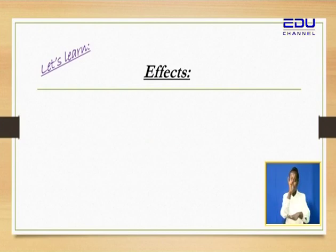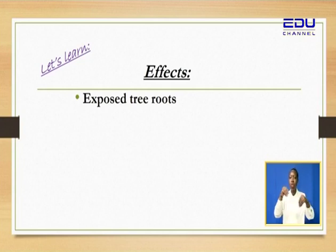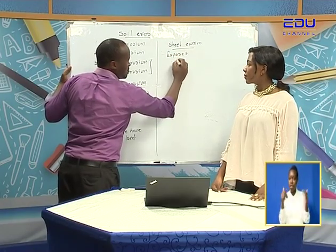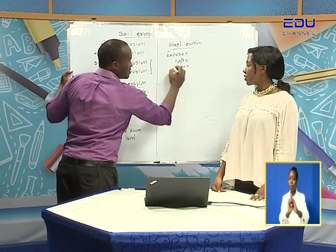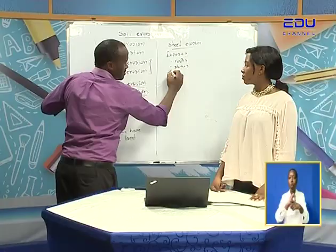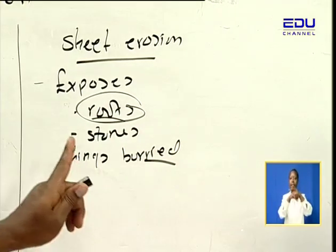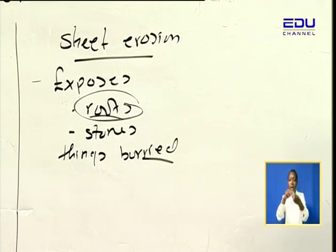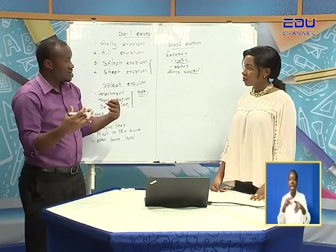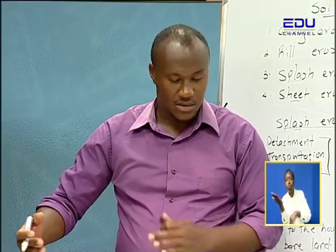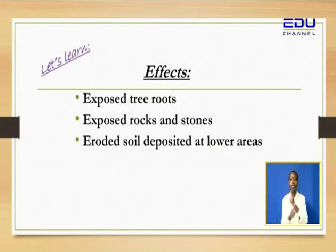Some of the effects of sheet erosion: we have exposure of the things that were hidden on the ground — exposure of tree roots, exposure of rocks and stones, basically things that have been buried. The roots of a plant hold the plant firmly in the soil, so when the roots start getting out of the soil, is the plant strong? No. Eventually it is going to fall. Let's assume the tree is next to the house — it falls on the house. That is an effect of soil erosion.